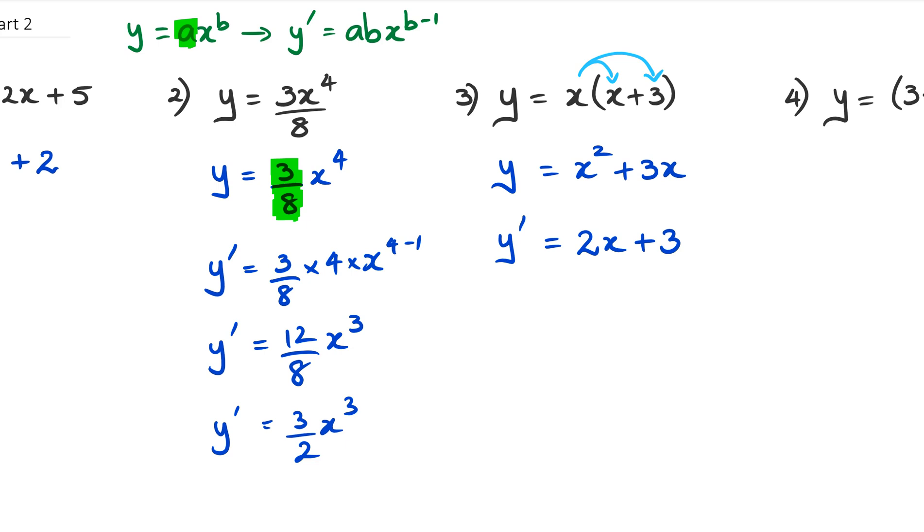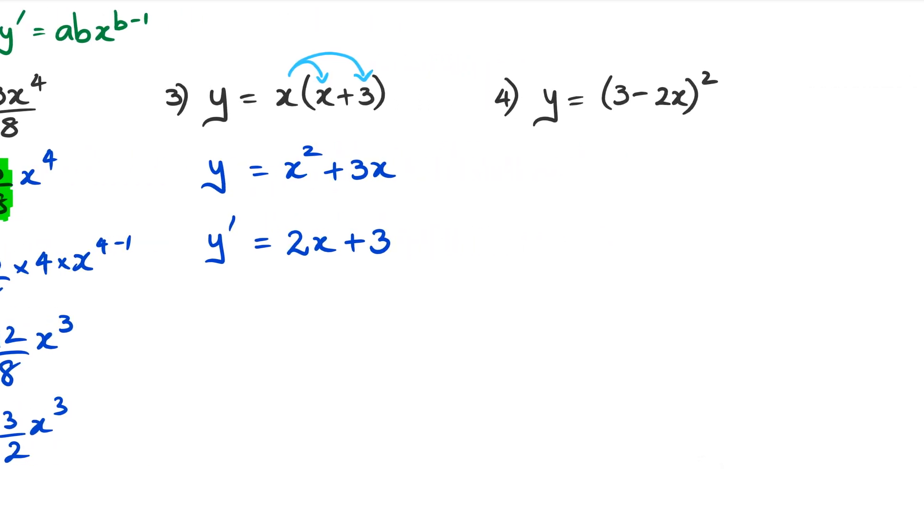Let's go to the last question. With the last question, I have to actually write down what y is first. So I need to expand the brackets. So I'm going to write it as 3 minus 2x multiplied by 3 minus 2x, and then I need to expand this quadratic. That means I'm using FOIL, well, whichever method that you guys are comfortable with, feel free to use it.